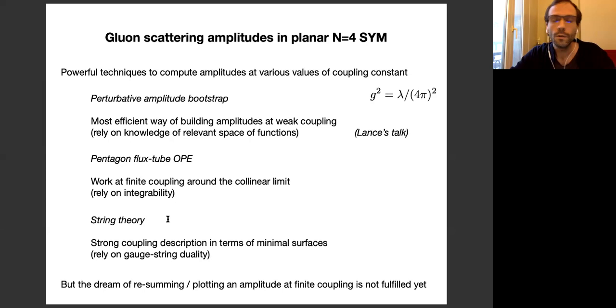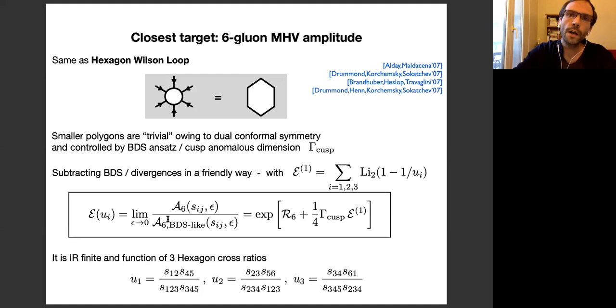When we put everything together, we get a very nice description. But the dream of resumming or plotting an amplitude at finite coupling is not fulfilled yet. So we have a lot of information, but we are not yet there in terms of solving completely and plotting. So perhaps this is wishful thinking. But if there is one theory where we might hope to be able to do that at some point one day, it's certainly N equals four in the planar limit. So we should keep trying, I guess. And the closest target, or the simplest one at least, is a six-gluon MHV amplitude.